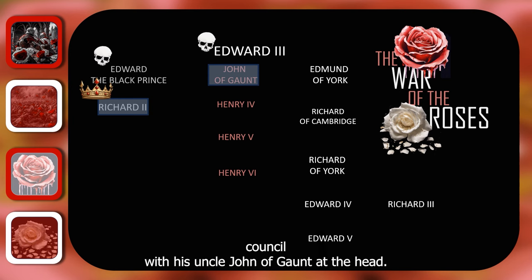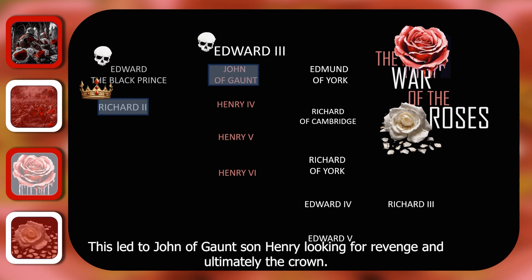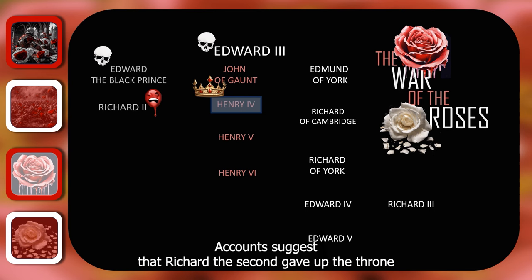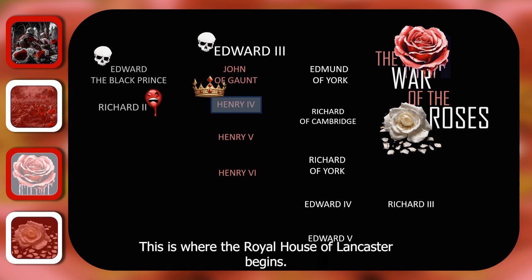This worked well until Richard grew older and gathered ambitions of his own. He then fell out with his uncle who was sent into exile. This led to John of Gaunt's son Henry looking for revenge, and ultimately the crown. Accounts suggest that Richard II gave up the throne willingly to his cousin who had more support in England, but this didn't stop him being murdered in his prison cell. Henry became Henry IV of England — this is where the Royal House of Lancaster begins.